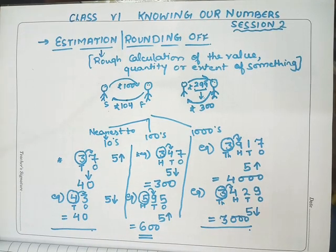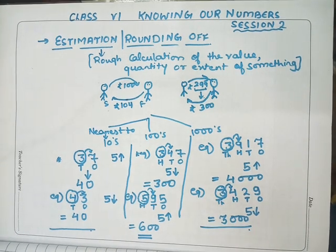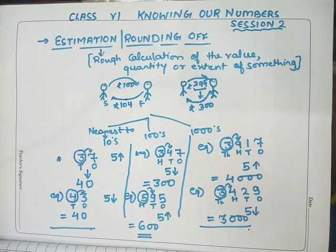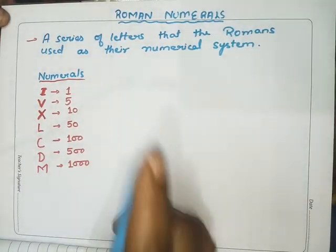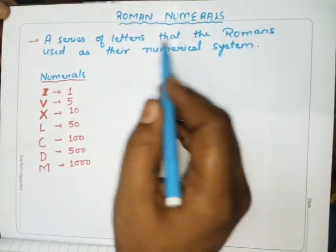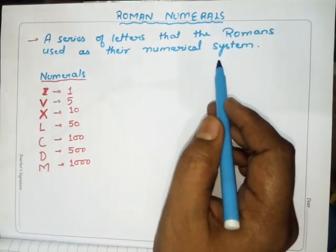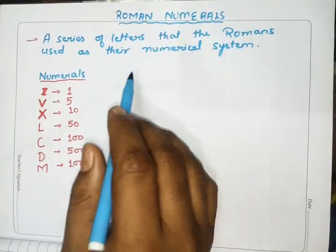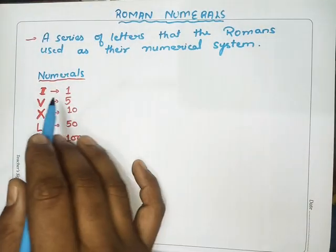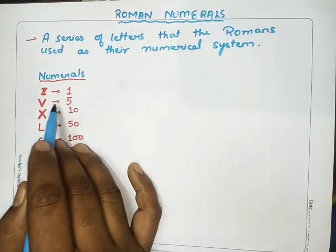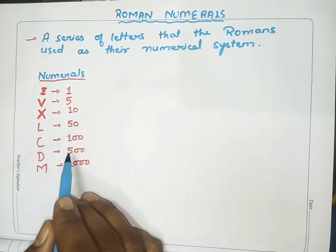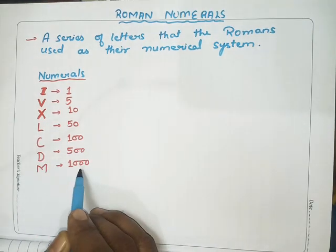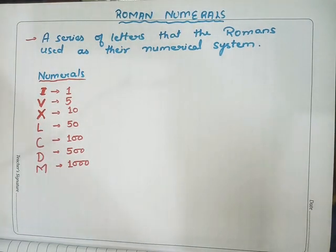Next topic is Roman numerals. Roman numerals are a series of letters that the Romans used as a numerical system. In this system: I represents 1, V represents 5, X represents 10, L represents 50, C represents 100, D represents 500, and M represents 1000.